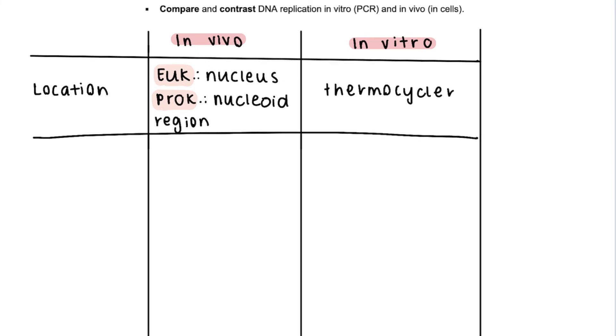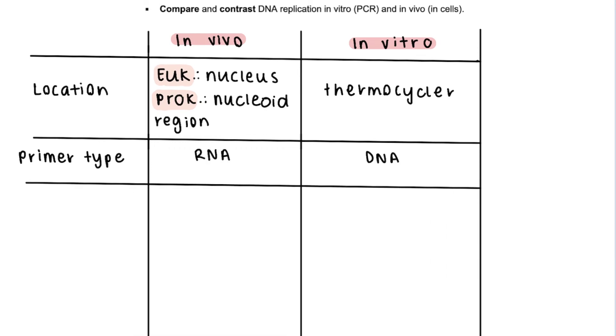Then in terms of the primer used to begin DNA replication, in vivo it is an RNA primer that's later replaced with DNA, and in vitro it is just straight up DNA.